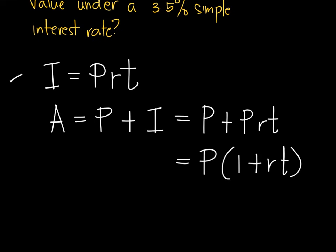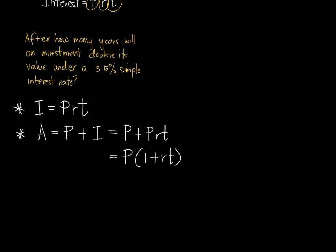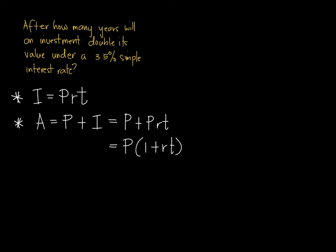So take note of the formulas. I, this is for the interest, and A for any future value or future amount. Now, going back to the problem, after how many years will an investment double its value under a 3.5% simple interest? In this kind of problem, it is better to apply the future value formula because it says about the future value of investment.